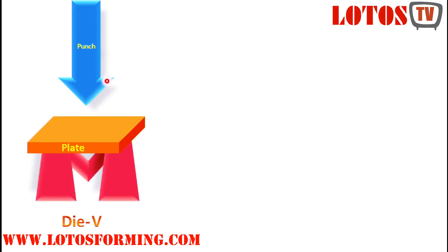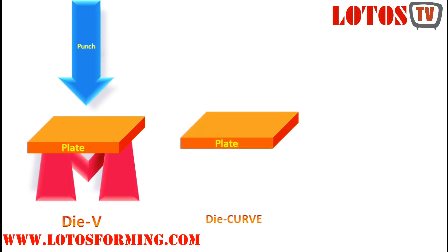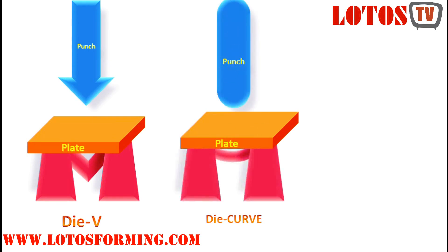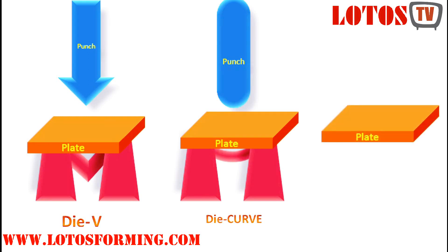Naturally, a stronger tool is required to endure larger quantities, harder sheet metal, and severe bending operations. In order of increasing strength, some common tooling materials include hardwood, low-carbon steel, tool steel, and carbide steel.